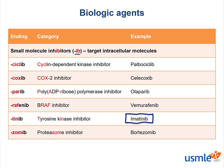One condition where imatinib is used is in patients with chronic myelogenous leukemia. Imatinib is a tyrosine kinase inhibitor of BCR-ABL, the Philadelphia chromosome fusion gene seen in CML.